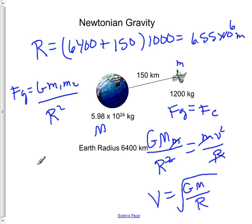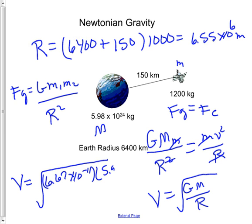Let's solve for that in this particular question. So orbital velocity v would equal the square root of 6.67 times 10 to the minus 11, multiplied by the mass of the Earth, 5.98 times 10 to the 24.